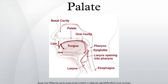The palate is divided into two parts: the anterior bony hard palate, and the posterior fleshy soft palate. The maxillary nerve branch of the trigeminal nerve supplies sensory innervation to the palate.